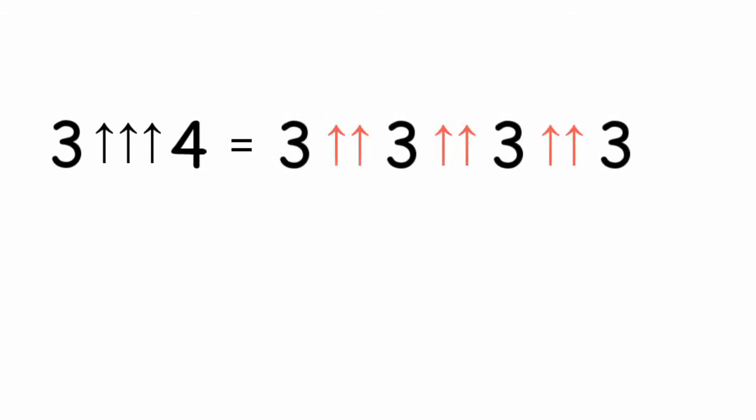We can even have 3 arrows. 3 triple arrow 4. Because we have 3 arrows, we do the repeated 2 arrows. We do this process 4 times.